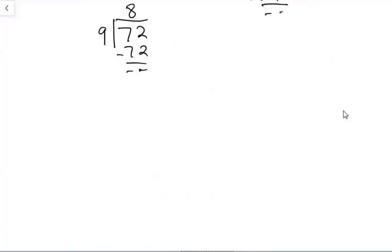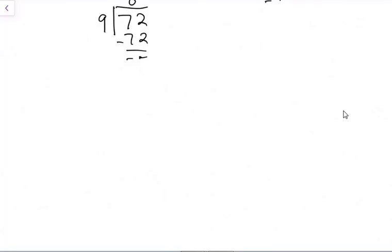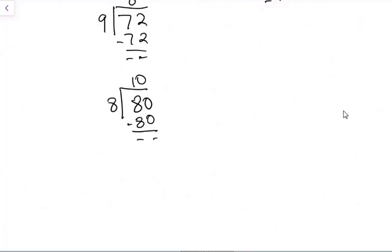The third example: we have 80 divided by 8. How many times will 8 go in 80? If we check our multiplication, it will go 10 times. And 10 times 8 gives us 80. If our answer were wrong and we subtracted, we would arrive at a remaining number. But the moment the result is equal to 0, it shows our answer is correct.